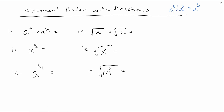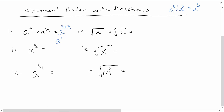So looking at our first example: a to the power of 1/2 times a to the power of 1/2 becomes a to the power of 1/2 plus 1/2, which is a to the power of 1 — the same thing as a. So a to the power of 1/2 times a to the power of 1/2 equals a.